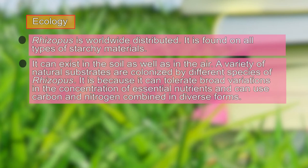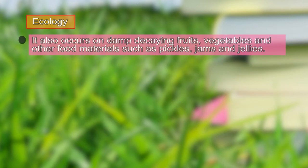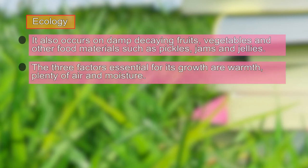Rhizopus is the most common and best known fungus, found growing frequently on stale bread, and therefore another name for Rhizopus is bread mold. It occurs in decaying fruits, vegetables, and many food materials such as pickles, jam, and jellies. The three factors essential for its growth and propagation are warmth, plenty of air, and moisture.